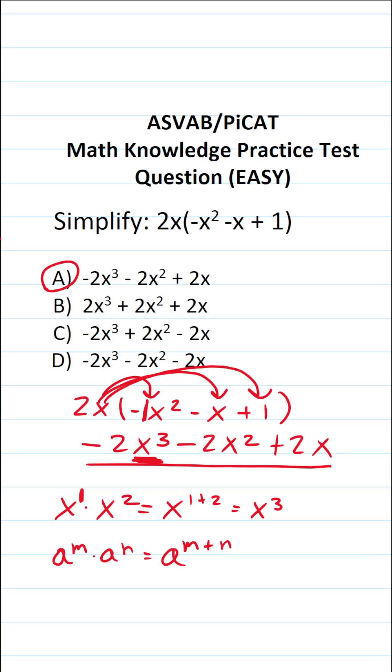Again, 2x times negative x. 2 times negative 1 is negative 2. And then we have x times x. Technically, there's a 1 here and a 1 here. According to the product rule, this would become x to the 1 plus 1, which is x squared.